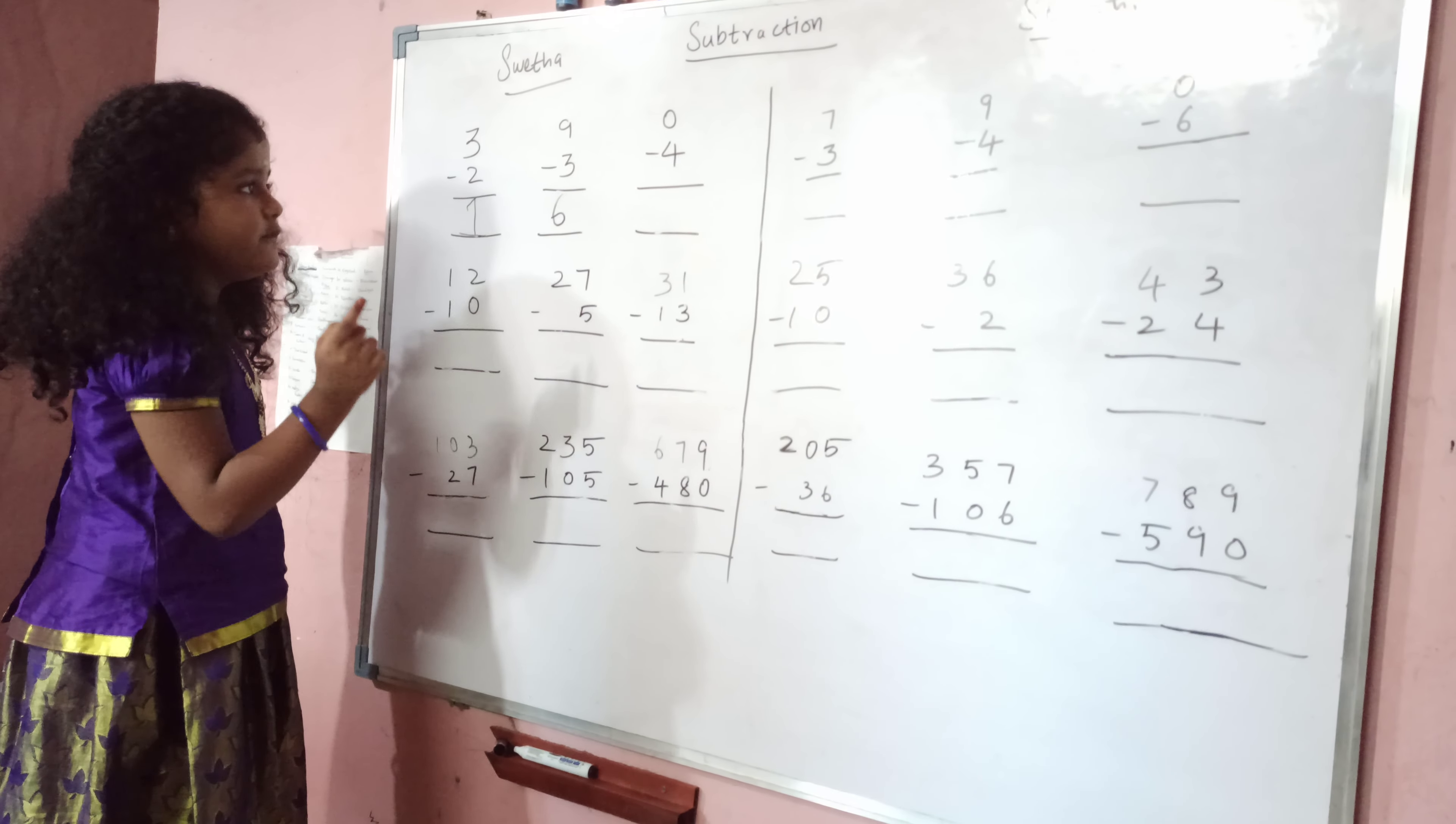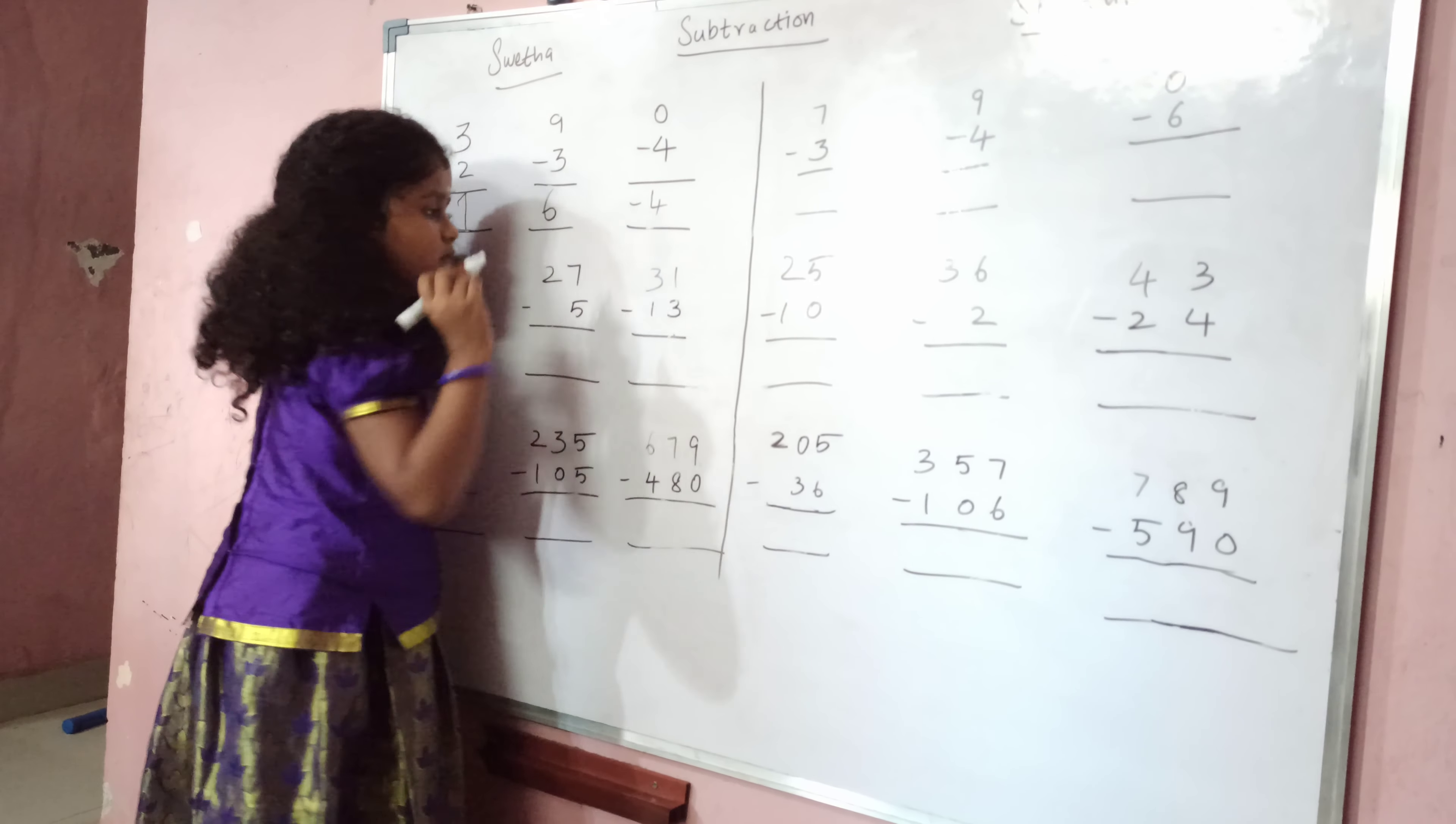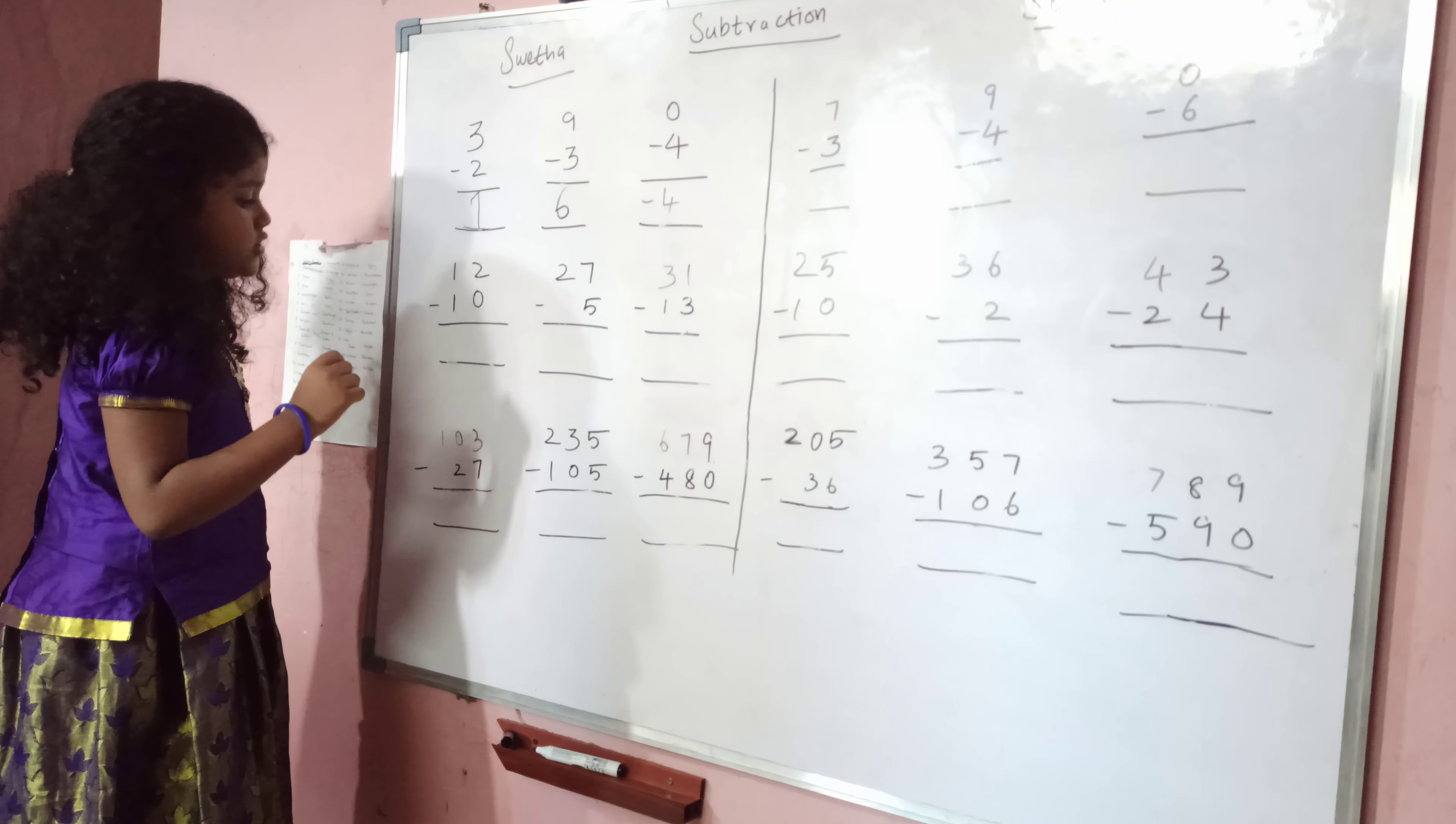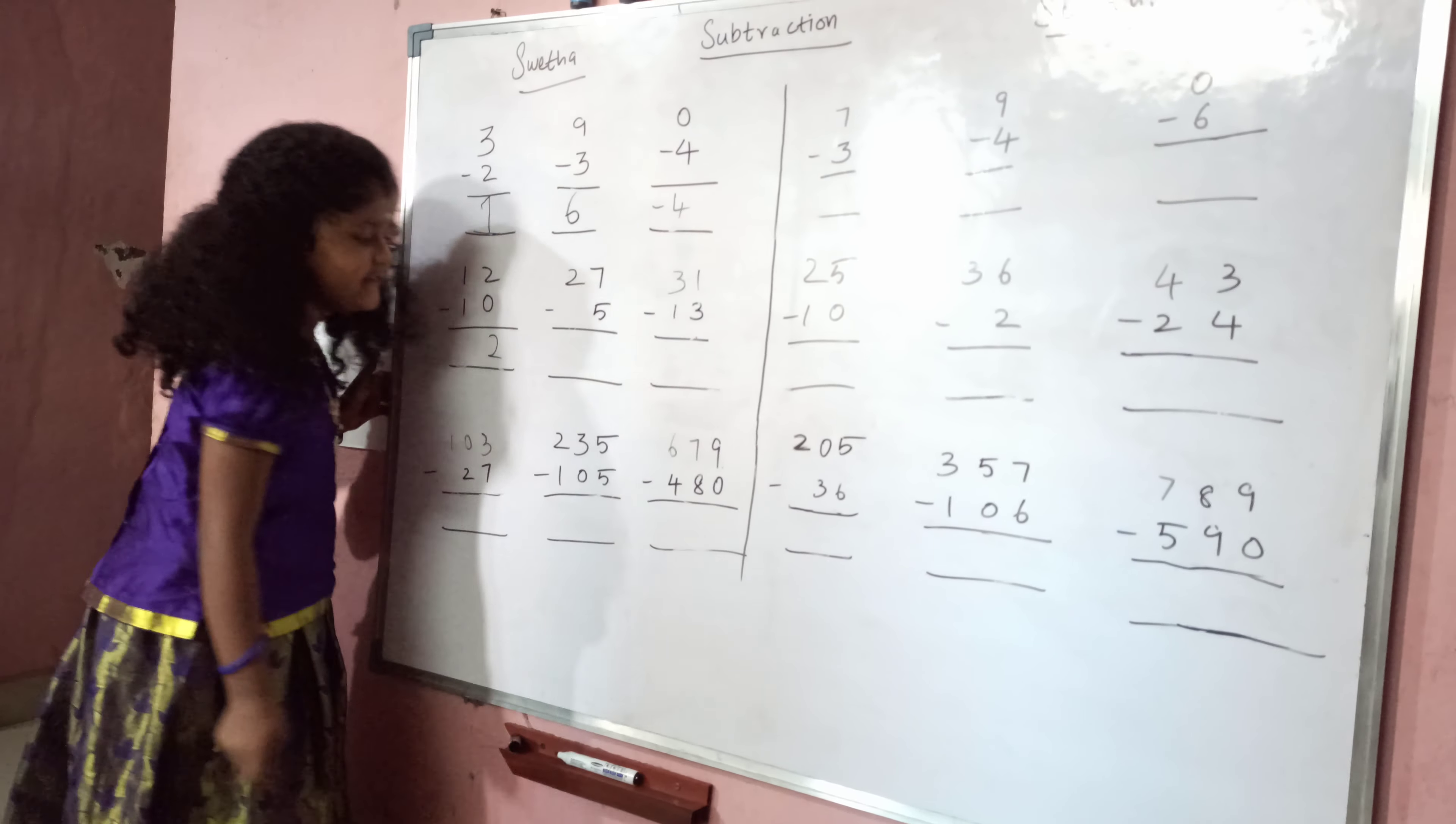Zero minus four is minus four. Two minus zero is two. One minus one is zero.